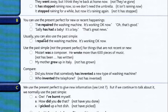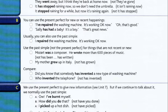Part B: you can use the present perfect for new or recent happenings, as we said in unit 7 and unit 8. For example: 'I have repaired the washing machine, it's working okay now.' 'Oh, that's good.' 'Sally has had a baby — it's a boy!' 'That's great news.' We use present perfect for new or recent happenings.